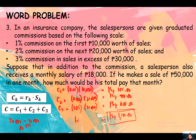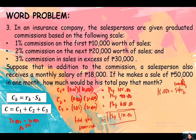So 1,100 pesos is the total of his commission. The salesperson also receives a monthly salary of 18,000. So 18,000 salary plus 1,100 commission equals 19,100 pesos total pay for that month.